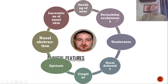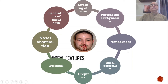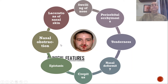Periorbital ecchymosis gives us an idea that the force and magnitude were extensive, and the injury may not be limited to the nasal bones but may involve the orbital rim, floor of the orbit, or the maxilla. Other findings include crepitus, nasal deformity, and lacerations of the nasal skin.